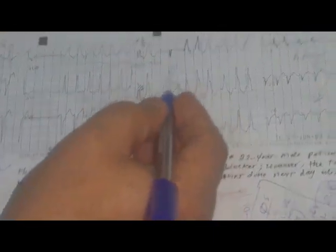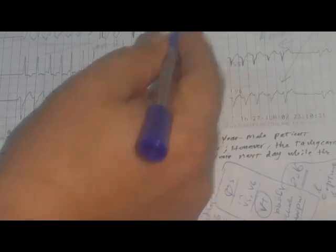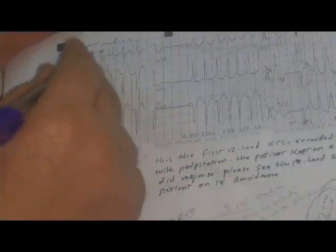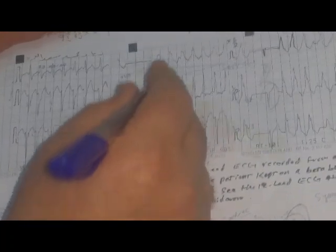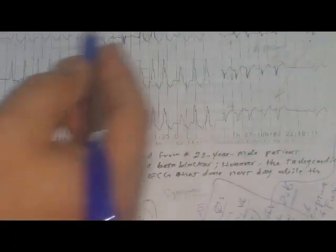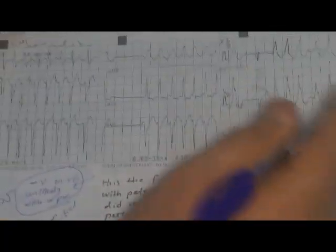But this is characteristically present with capture beat and fusion beat, monomorphic ventricular tachycardia with characteristic ECG that is right bundle branch block with left axis deviation. This tachycardia responds to verapamil and structurally normal heart.